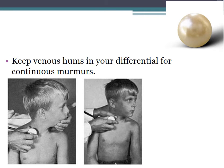It's important to keep venous hums in your differential for continuous murmurs. Unlike PDAs, which are machinery-like and coarse, venous hums are much softer. The key way to identify a venous hum is that it changes with head turning — louder in one direction, less in another — and is heard when the child is sitting up but not as well when lying down. Venous hums are non-pathologic and require reassurance, whereas PDAs require cardiology follow-up.